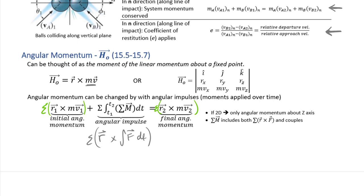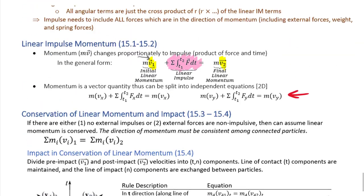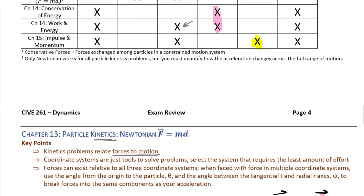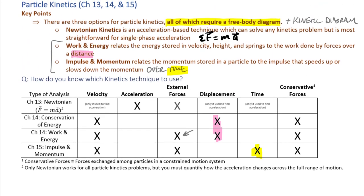That covers all the topics in particle kinetics. Work as many problems as possible across these areas, ideally selecting problems where you don't know exactly which section they came from, and give yourself a time-limited window to work on each. Have a solution available so you can check if stuck, but don't spend hours on a single problem. Move through as many problems as possible to get fluent in all these areas and get very good at selecting across the different kinetics tools — Newtonian, work and energy, and impulse and momentum.